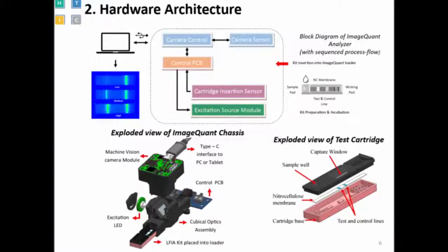I will give a brief about fluorescence measurement in the next few slides. The exploded view of the ImageQuant chassis includes the camera as the main sensing part and an excitation LED for the cartridge, shown in pink. The cartridge is a plastic piece containing nitrocellulose membranes inside, with test and control lines on that membrane. When a blood or serum sample mixed with reagents is dispensed, a biological reaction occurs, which is finally visible in terms of test and control lines.